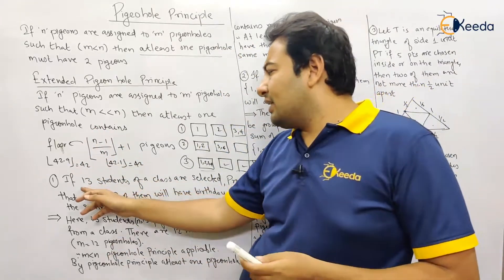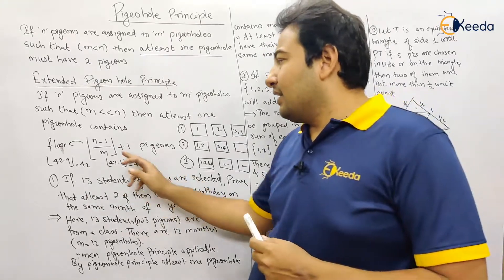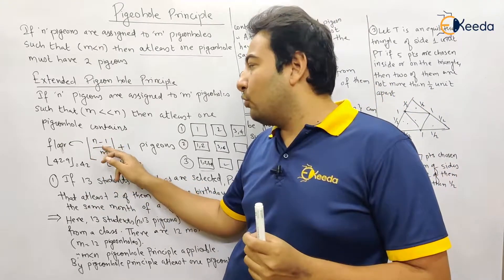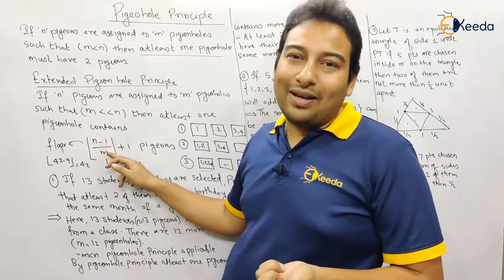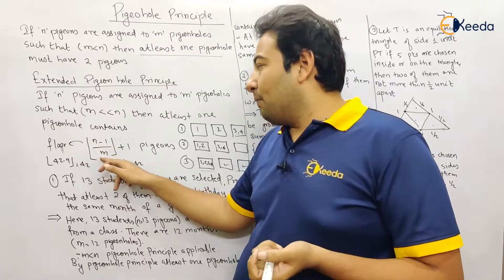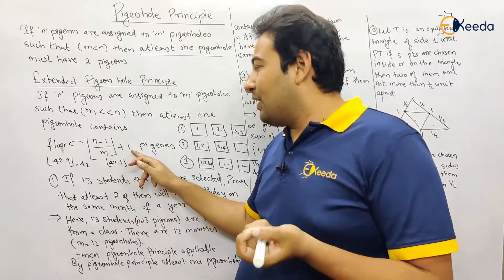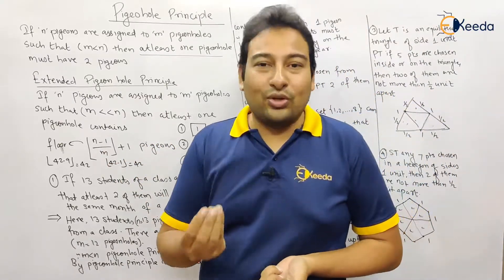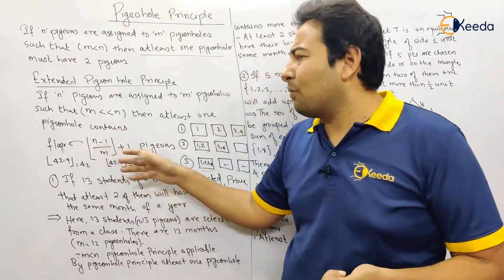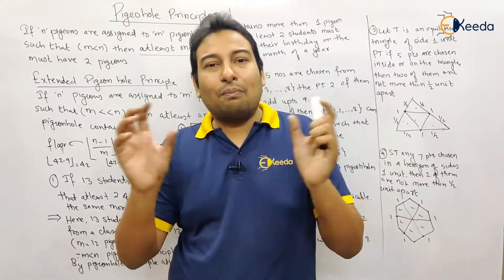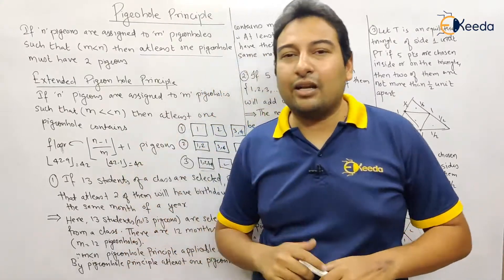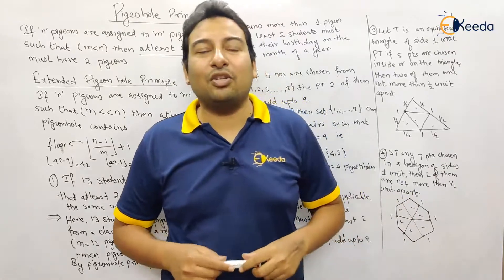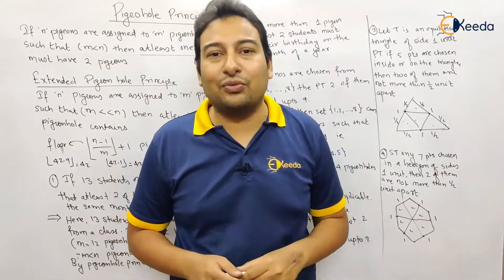You can always apply the extended formula too. For 13 students and 12 months: floor((13-1)/12) + 1 = floor(12/12) + 1 = 1 + 1 = 2, confirming at least two students share a birth month. For small differences, we use basic Pigeonhole Principle directly. For large differences, use the Extended Pigeonhole Principle. That's it for this video — next video covers Extended Pigeonhole Principle examples. Thank you for watching.